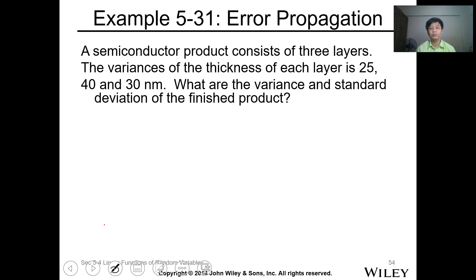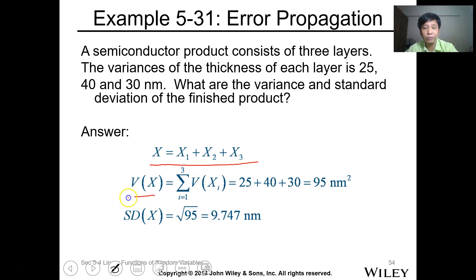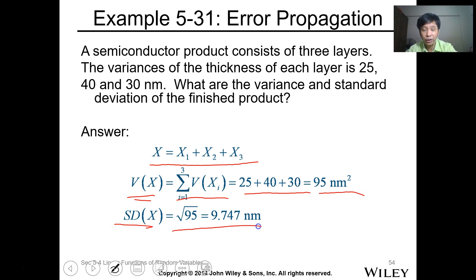Let's have this problem: Error propagation. A semiconductor product consists of three layers. The variance of the thickness of each layer is 25, 40, and 30 nanometers squared. What are the variance and the standard deviation of the finished product? Assuming the three layers are independent, x equals x1 plus x2 plus x3. For the variance, you just take the sum of all variances: 25 plus 40 plus 30 equals 95. For the standard deviation, take the square root: square root of 95 is 9.747.